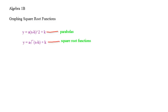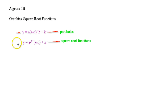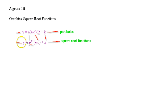Today we'll talk about graphing square root functions. What I've drawn on the board is actually two functions — one that you're very familiar with from quadratics, which is the parabola, and then one from this chapter dealing with square root functions. They do have some differences, like the square versus the square root, but they have a lot of similarities. We're going to talk about on Desmos what those similarities do.